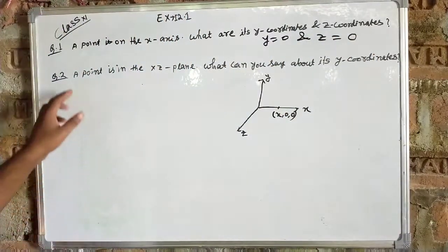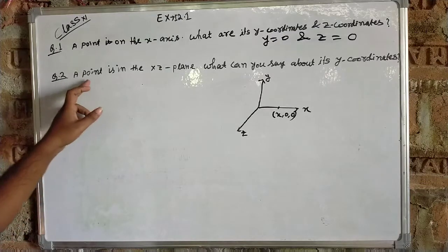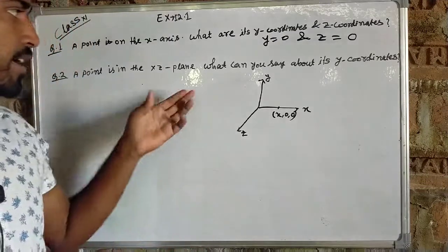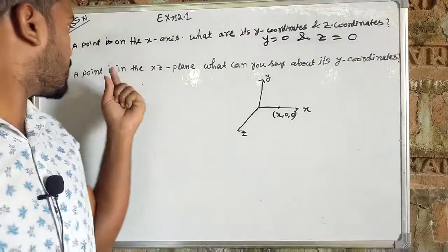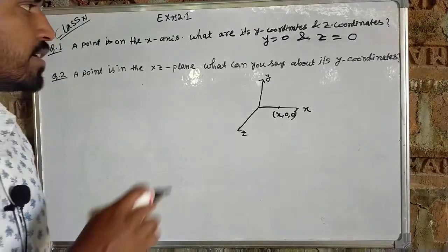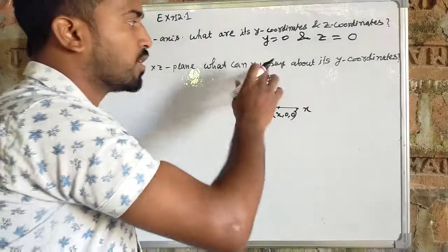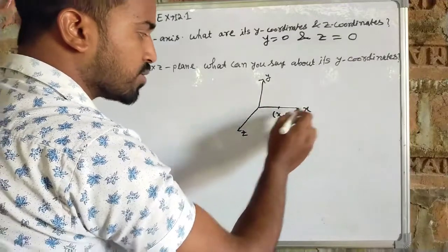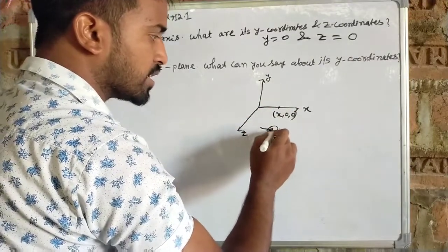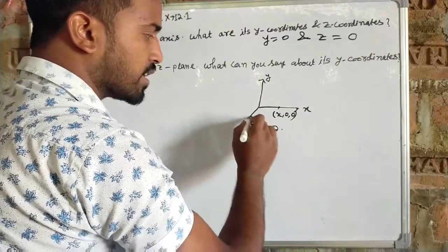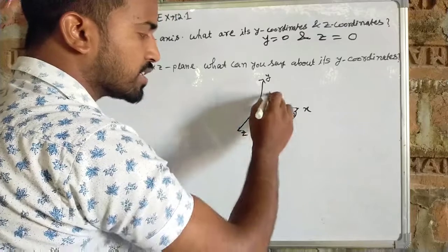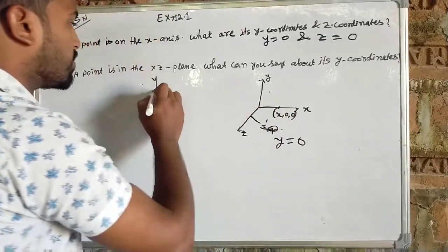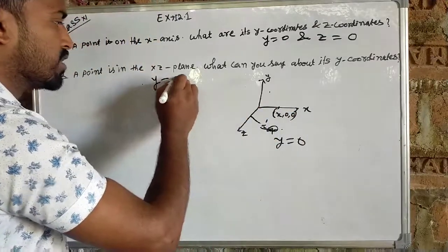Similarly, question number 2: a point lies in the XZ plane. What can you say about its y-coordinates? The y-coordinates are 0, so y is equal to 0.